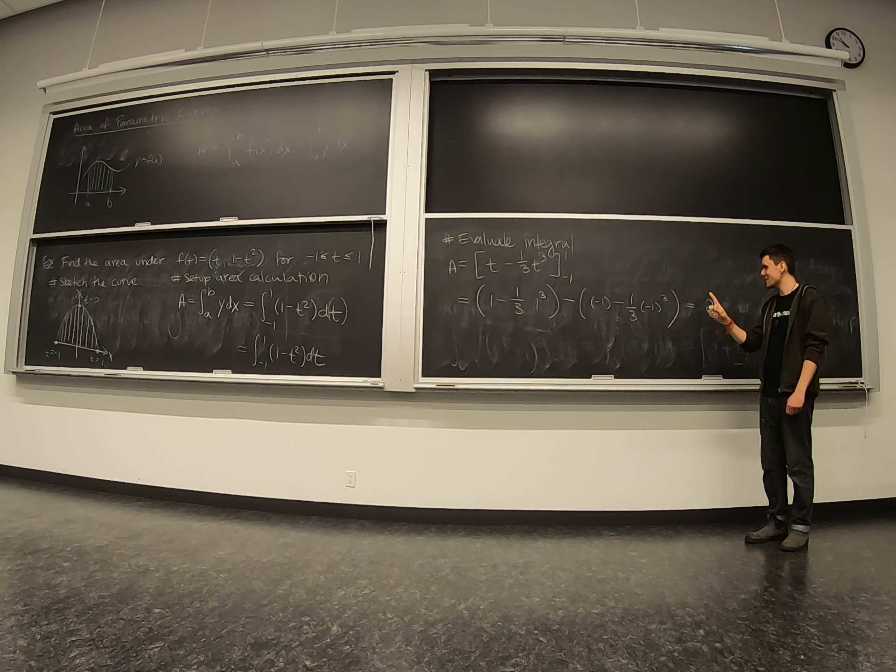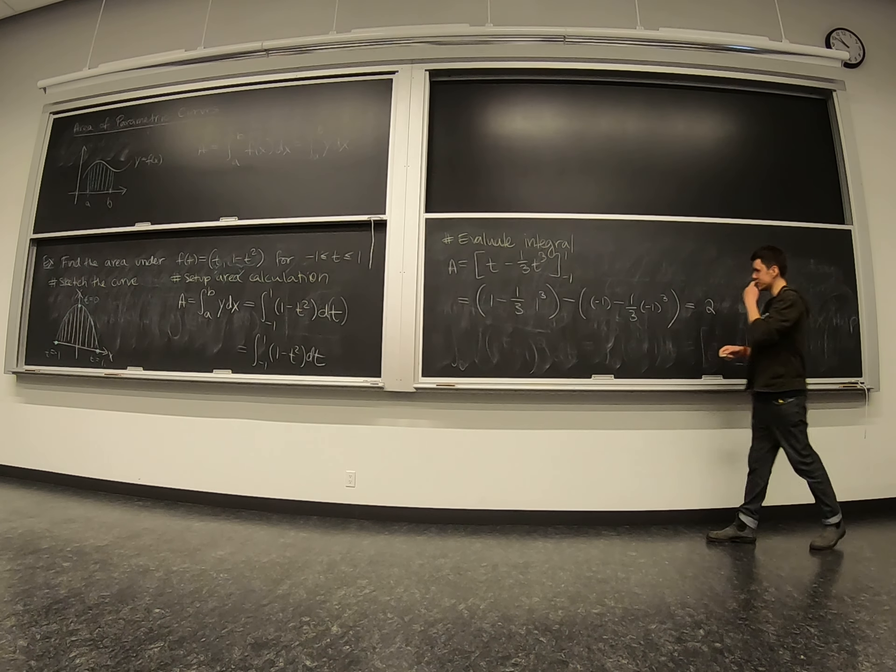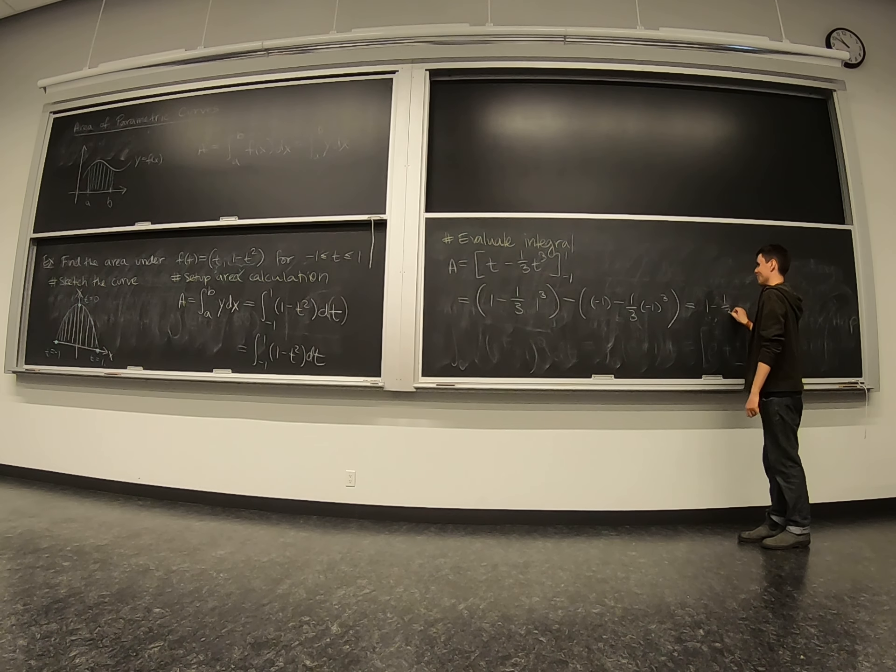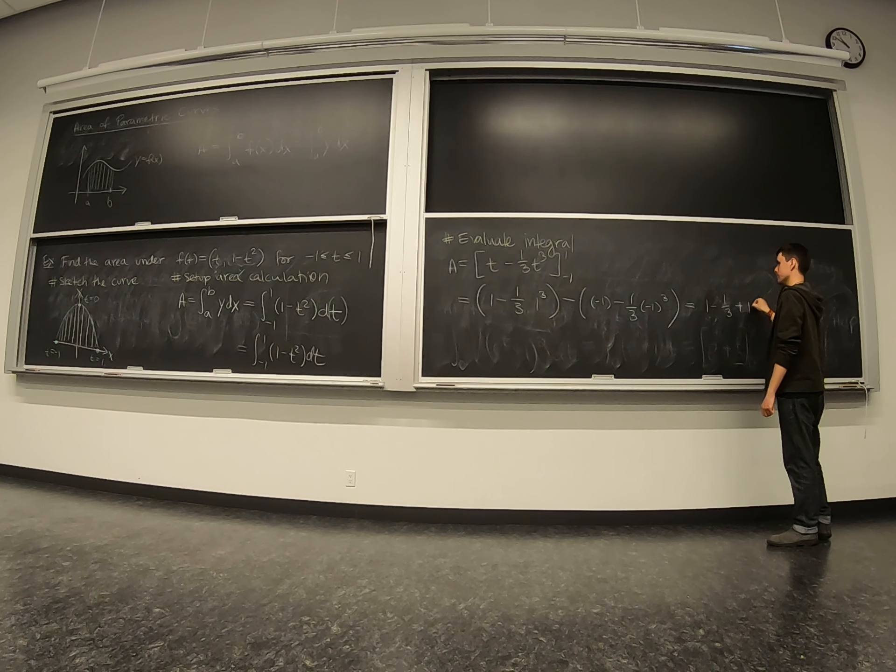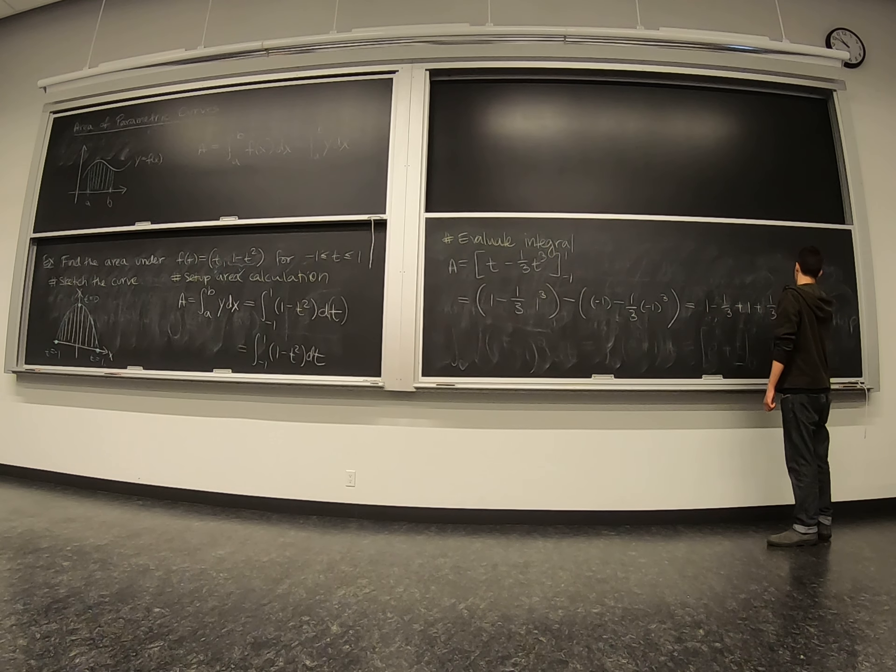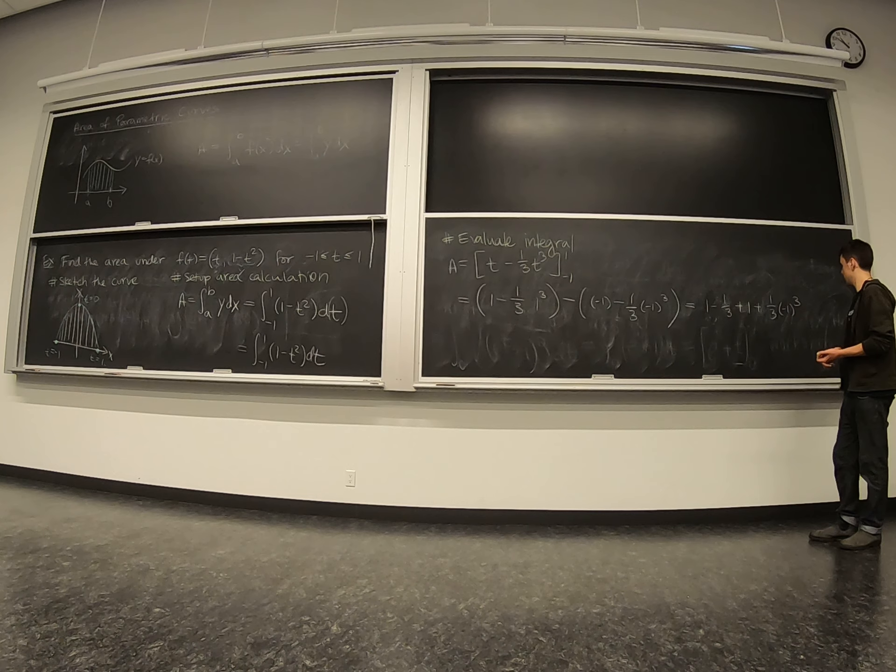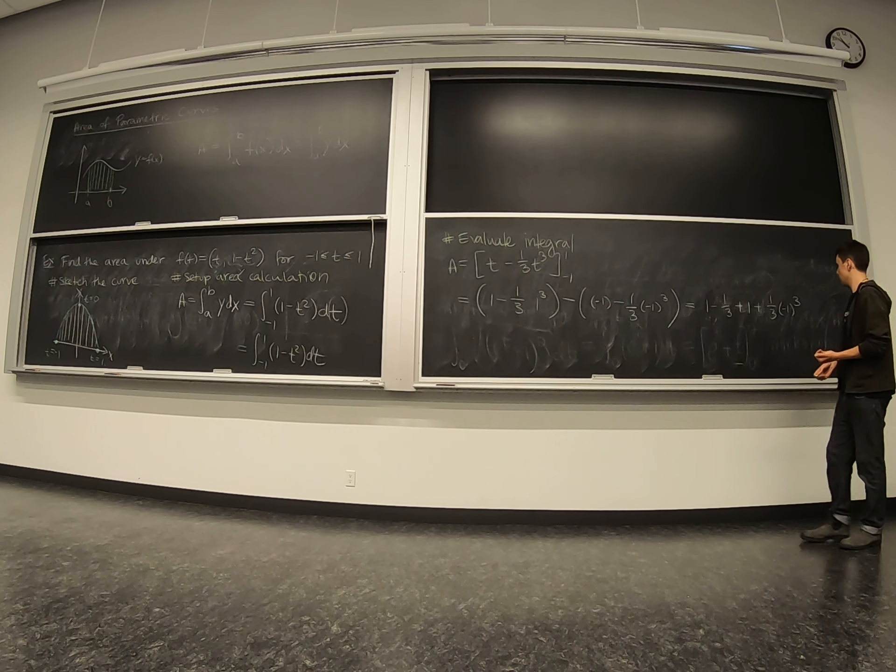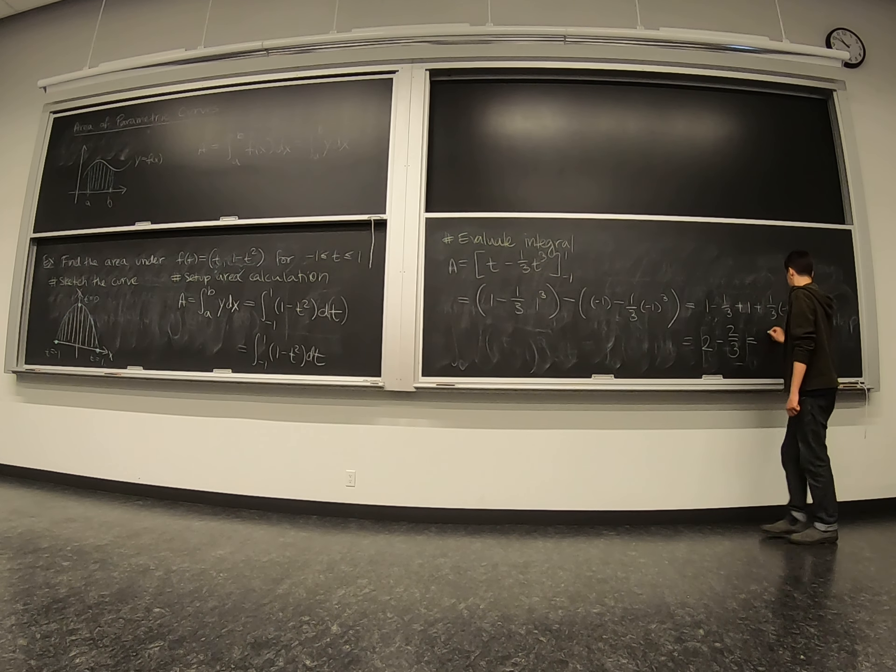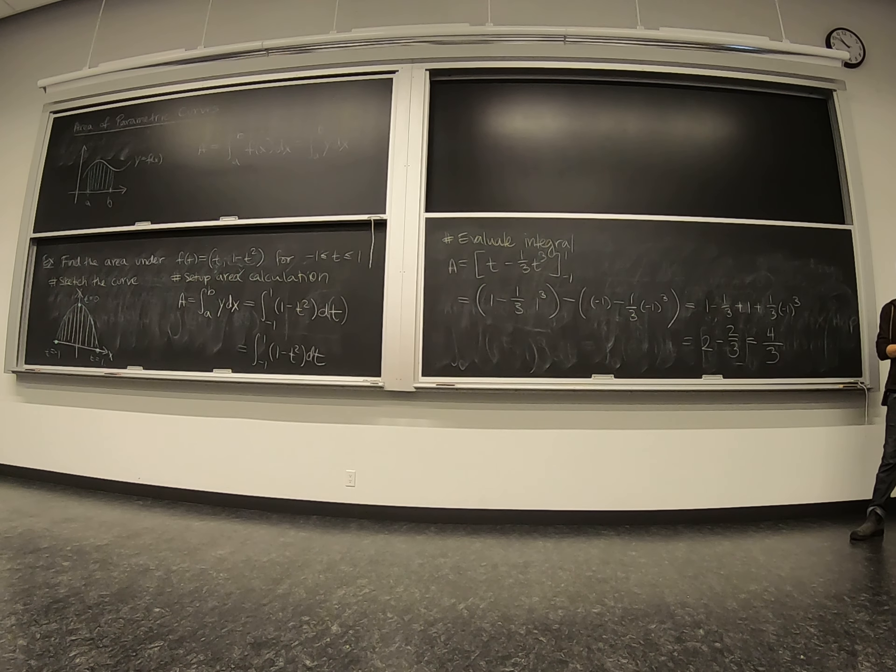Now we have to be very careful with the signs. Let's write it all out very carefully. Okay, so we get a total area of 4 thirds.